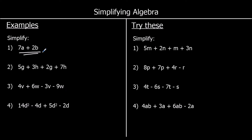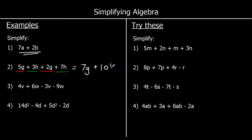Question 2: we've got g terms and h terms, so we can collect them separately. We've got 5g plus 2g, and 3h plus 7h. For the g terms: 5 plus 2 makes 7, so 7g. For the h terms: 3 plus 7 is 10, so 3h plus 7h makes 10h.